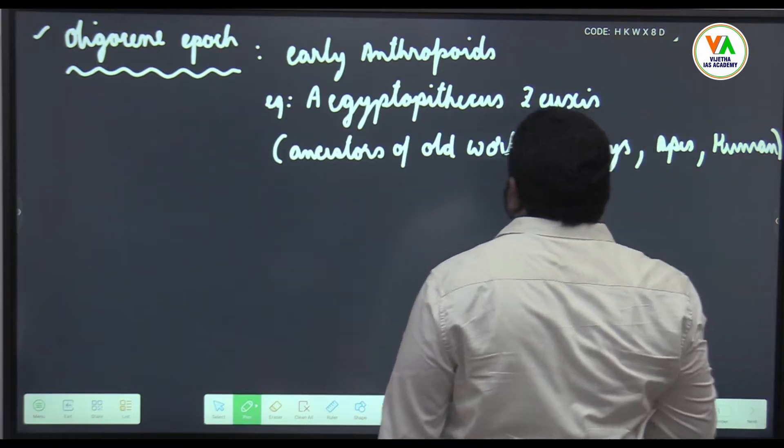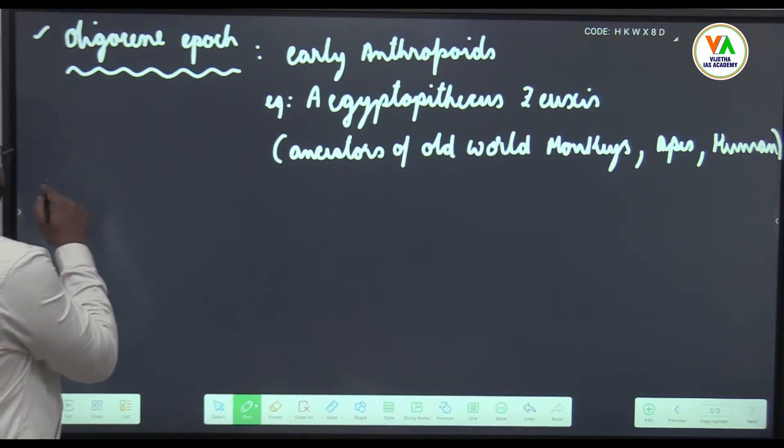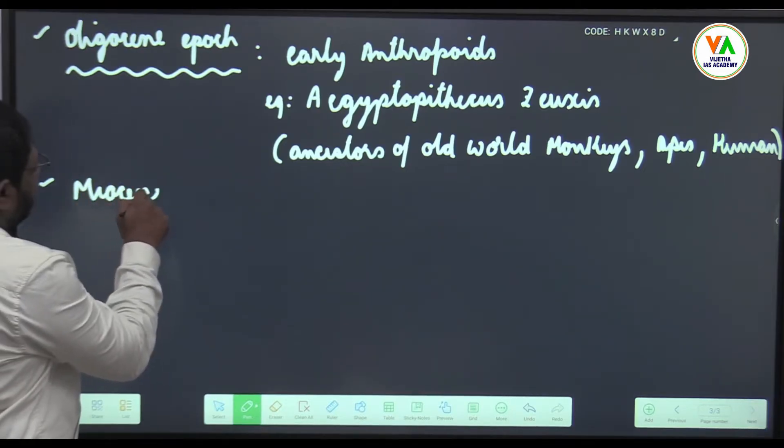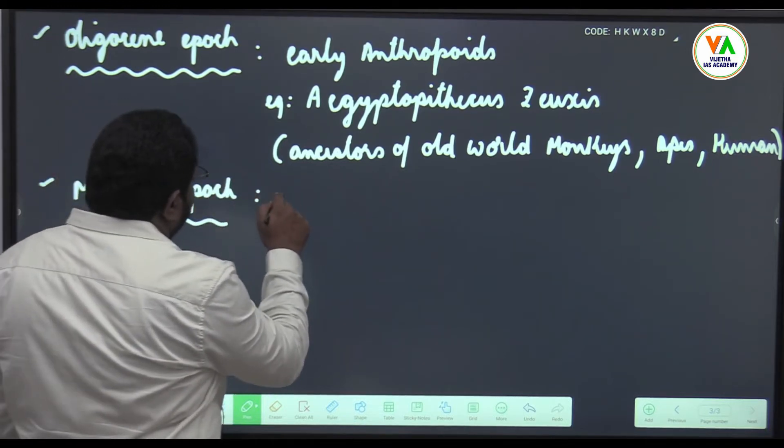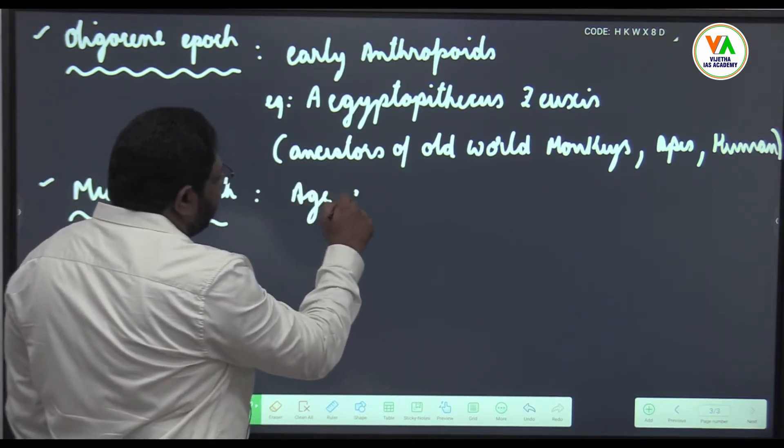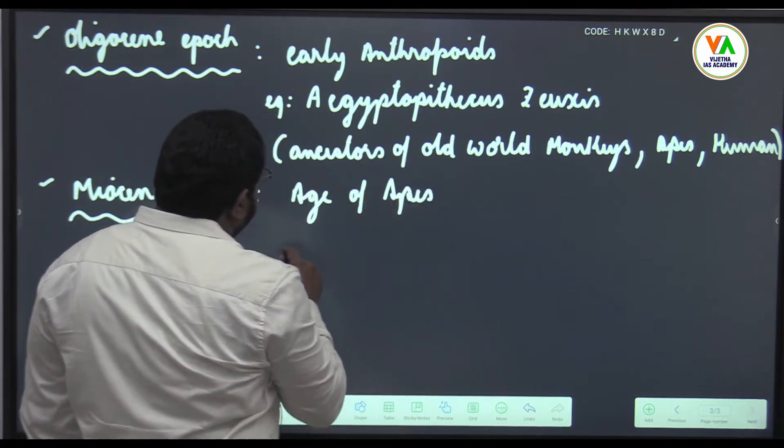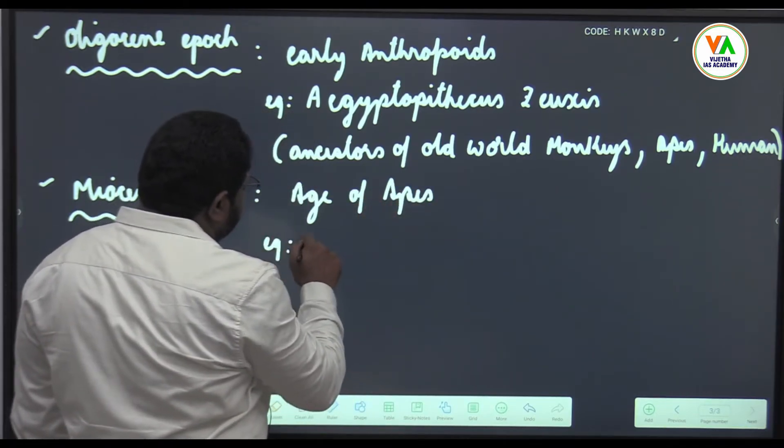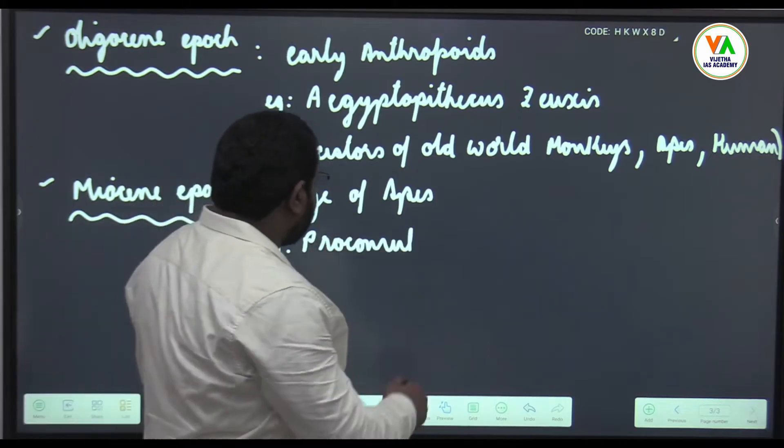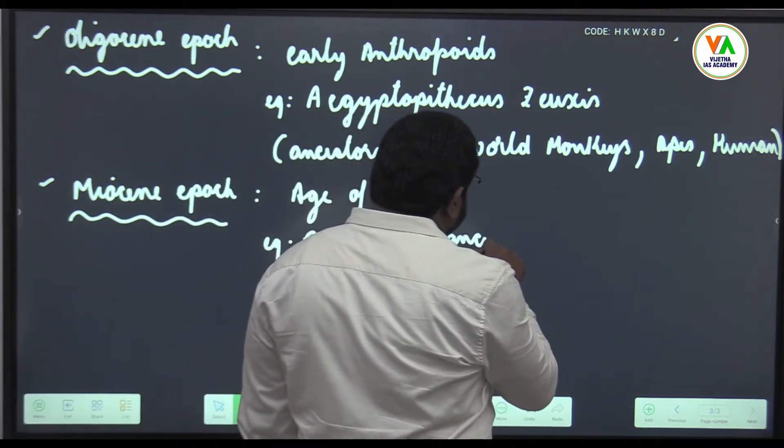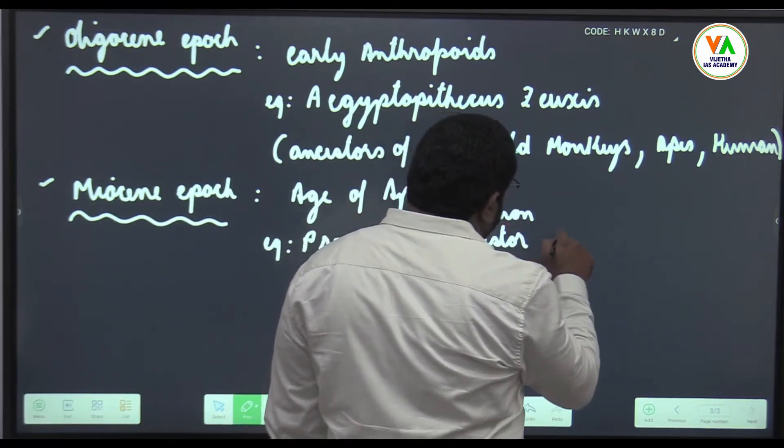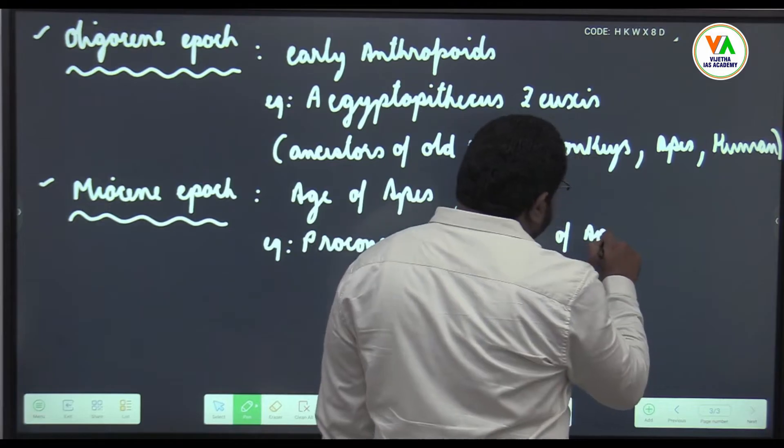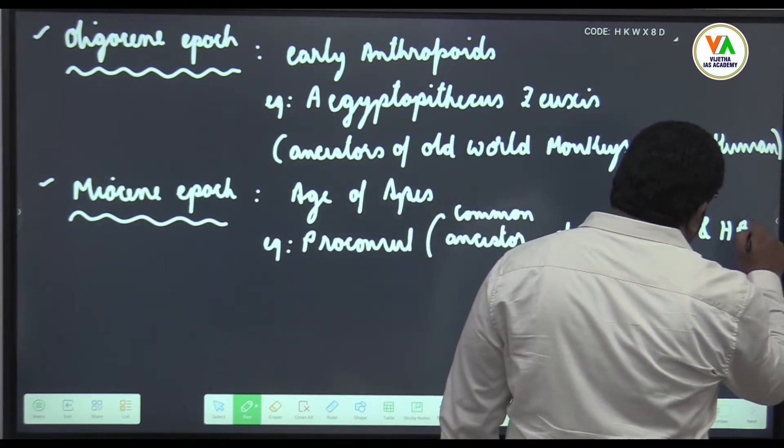After Oligocene epoch you have Miocene epoch which is considered to be the age of apes. Here you can take Proconsul. Proconsuls are believed to be the common ancestor of great apes, big apes and human beings.